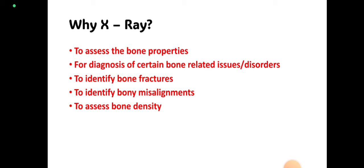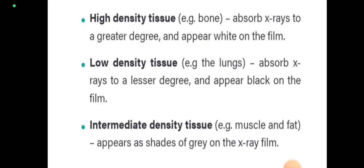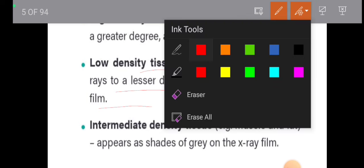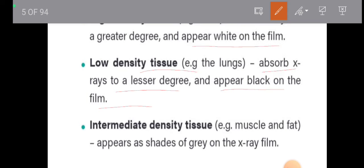High-density components will be visible on x-rays, like metals and bones. Here is the density chart: high density will absorb a great amount of x-ray and will appear white on the film. Low-density tissue like lungs will absorb less x-rays and will appear black on the film. Intermediate-density tissues like muscle and fat will appear as shades of gray on the x-ray film.